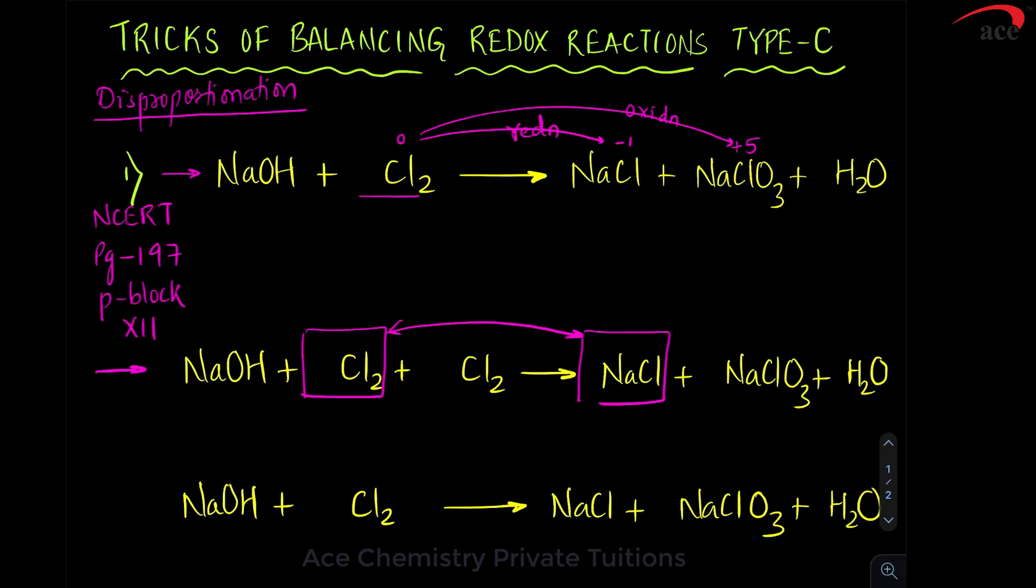This and this balancing we keep them together. So, they go hand in hand with that balancing, and this balancing and this balancing we keep them together. So, what next? We write down the reaction one more time. NaOH plus Cl2 plus Cl2 gives you NaCl plus NaClO3 plus H2O.